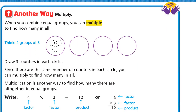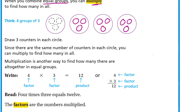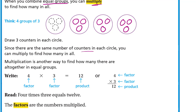Now let's go to another way — we will use multiplication. When you combine equal groups, you can multiply to find how many in all. In this example, we have four equal groups, each with the same number of apples — each has three apples. So four loaves, each loaf has three apples. We'll draw three counters inside each circle, and since there are the same number of counters in each circle, you can multiply to find how many in all.